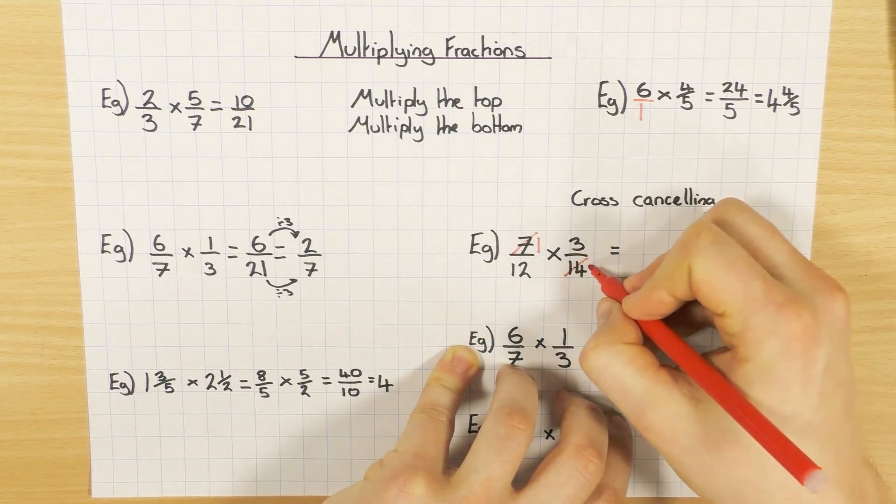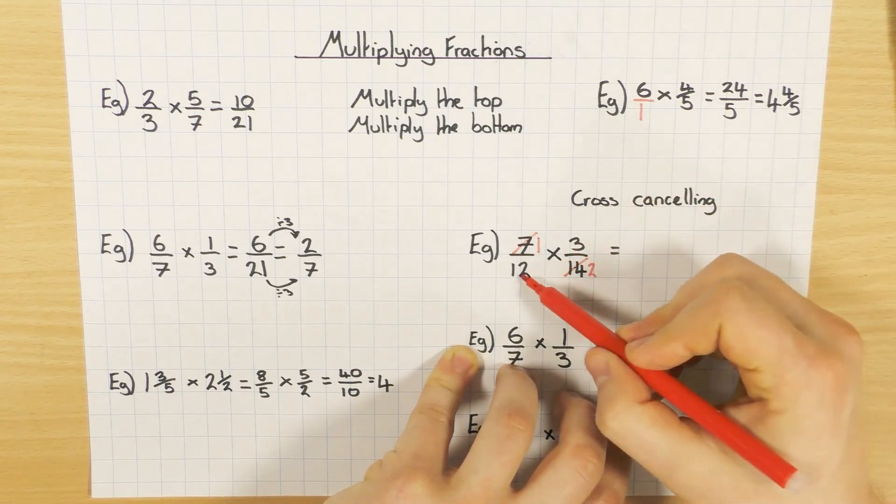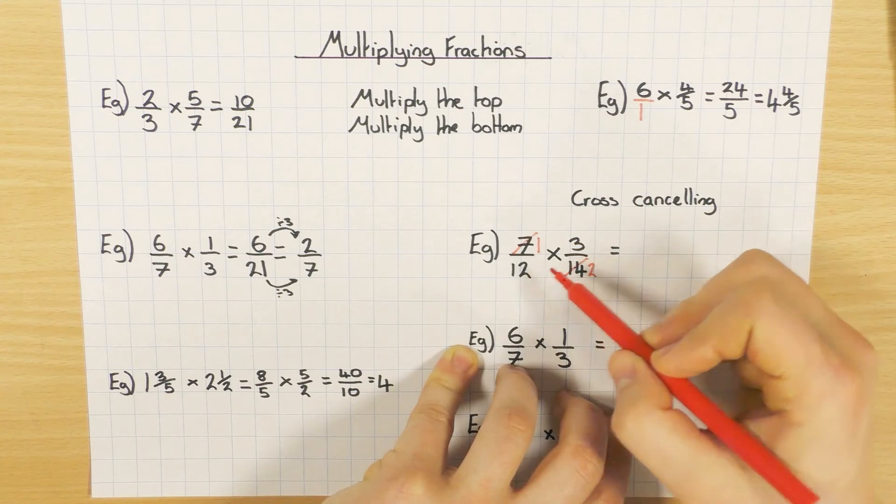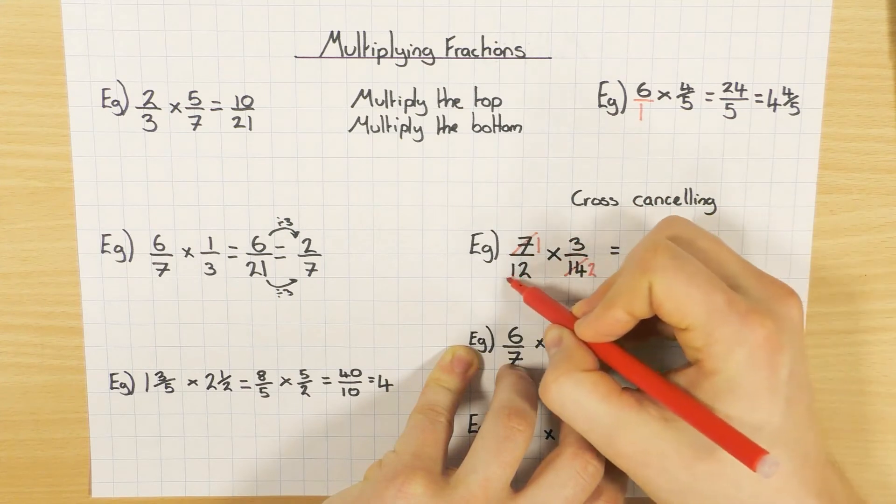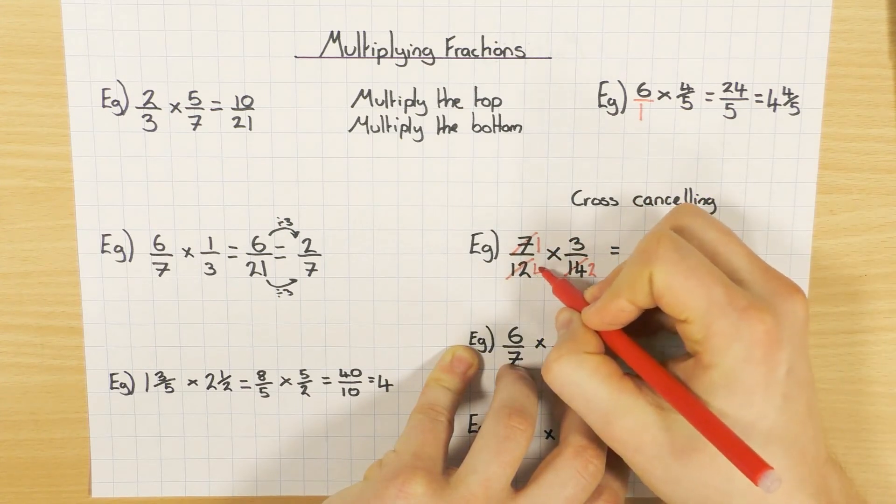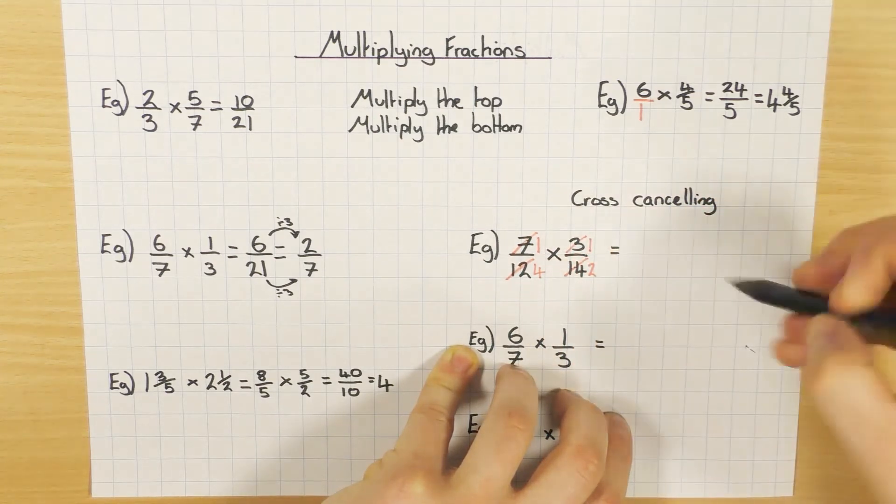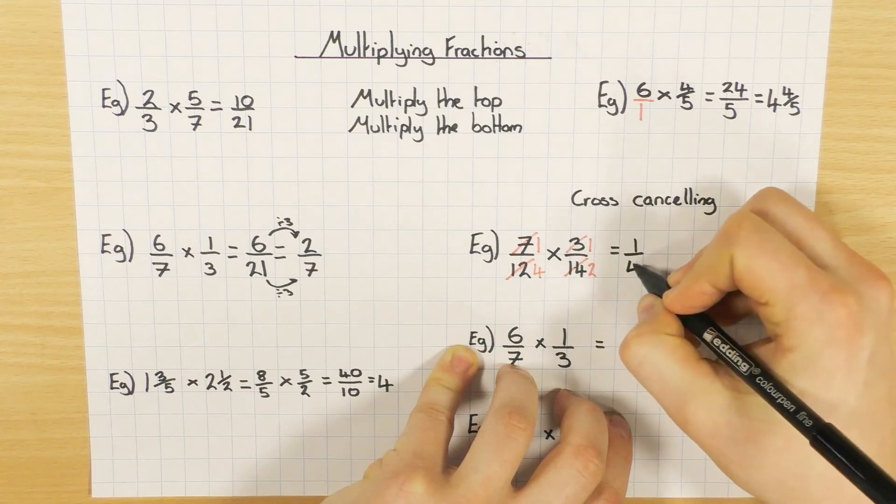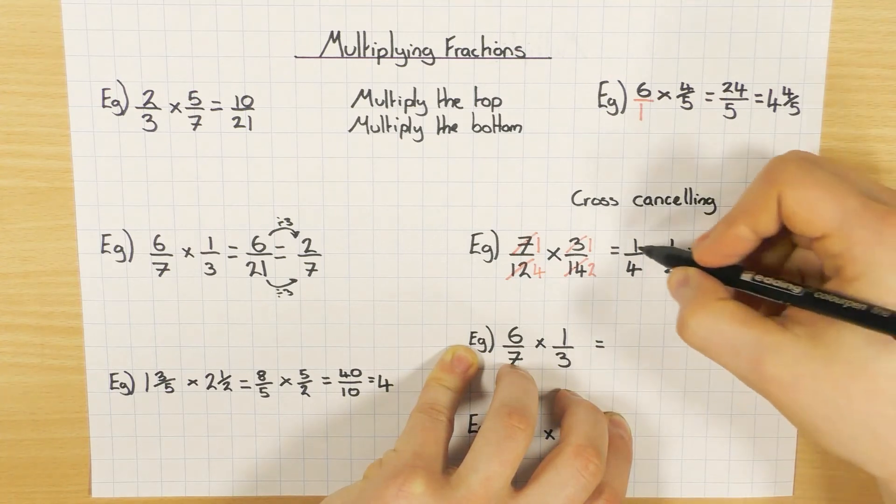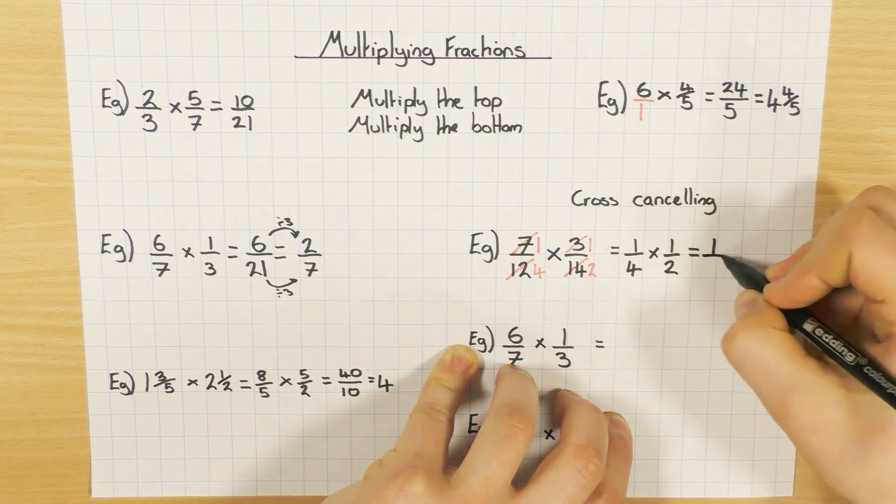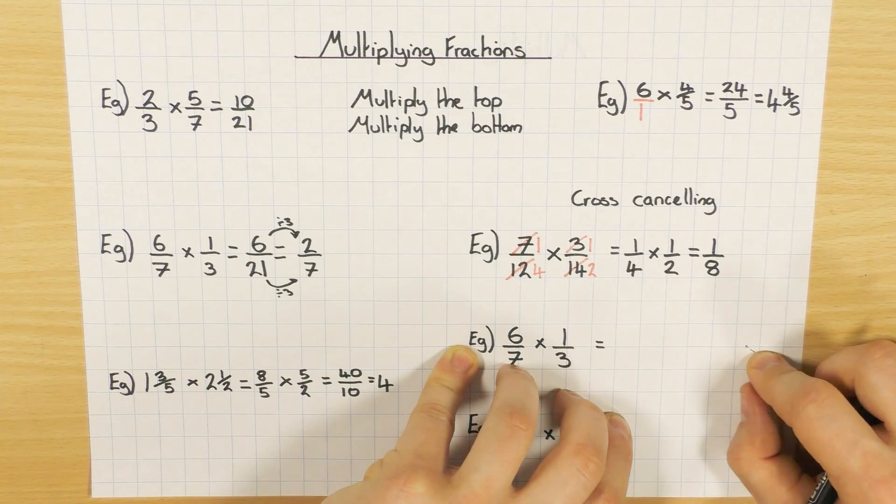Exactly the same thing here. Look at these two as a diagonal. Is there a number that goes into 12 and 3? Well, yes there is. 3 goes into both of them. So 12 divided by 3 is 4, and 3 divided by 3 is 1. So I've actually changed the question to be 1 quarter times by 1 half, which is obviously a lot easier. 1 times 1 is 1, 4 times 2 is 8. So it's just a quick way of simplifying as opposed to doing it at the end.